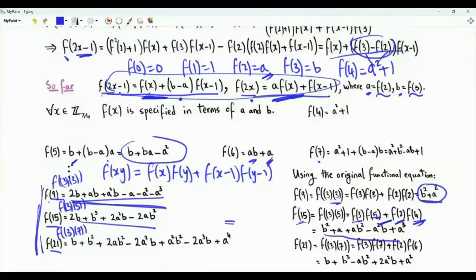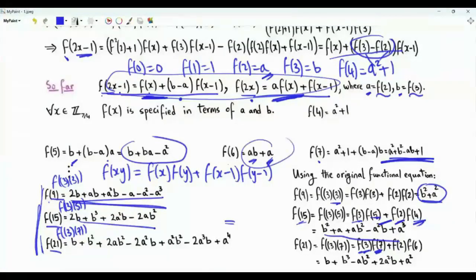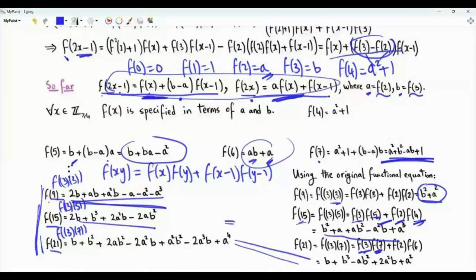f(21) = f(3·7) = f(3)·f(7) + f(2)·f(6). So it is b times (a²+b²-ab+1) plus a times (ab+a). These two expressions must be equal. The sequence is fully determined by a and b, but a and b must satisfy those three equations we have obtained.